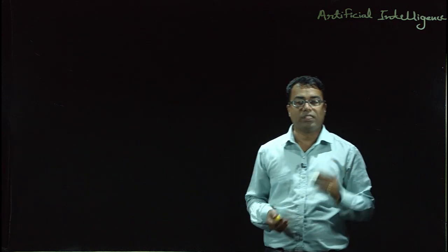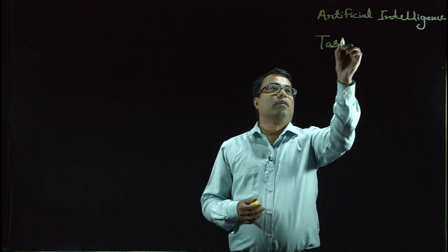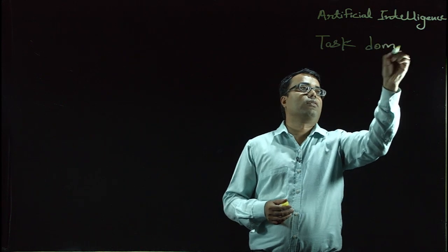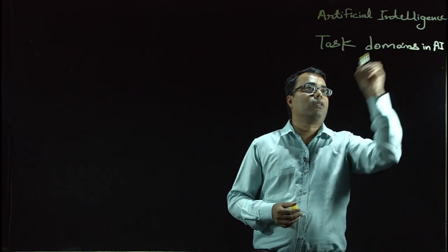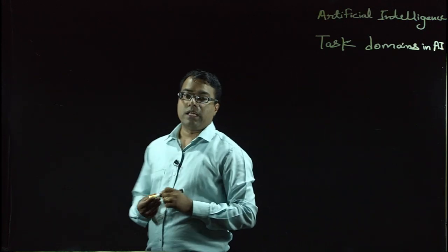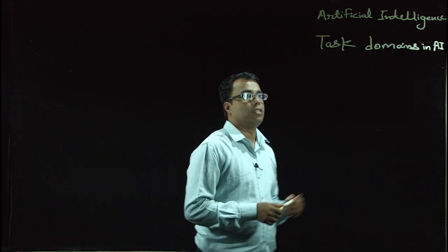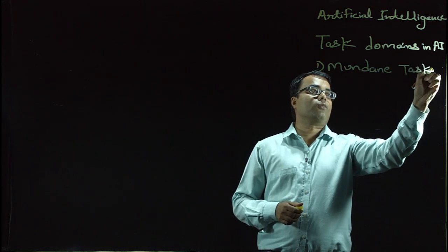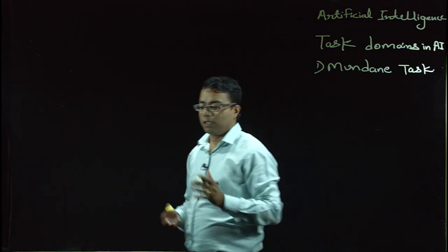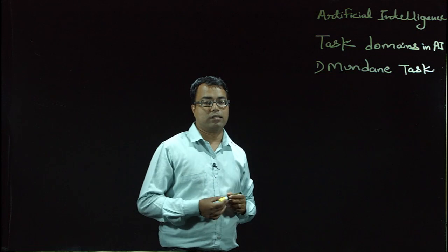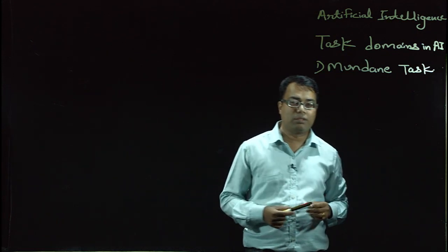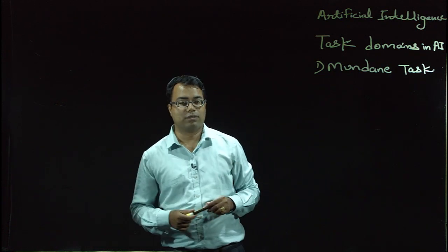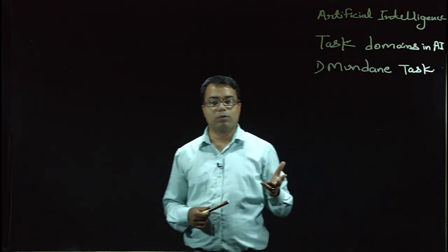Now, what are some of the task domains in AI? That is, the target of work carried out in AI. There are three groups of task domains. The first is mundane tasks — tasks which do not require much critical thinking, like perception of vision and speech, natural language understanding, generation, translation, common sense reasoning, robot control, and so on.